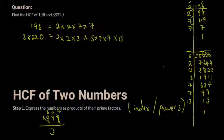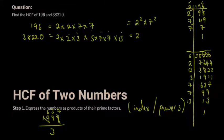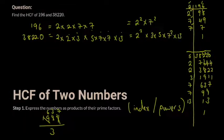One common mistake is forgetting a number, so take inventory — count your factors like checking stock. For 38,220 I count seven factors: that's correct. Put your equal signs in a straight line. Then convert to index form: write each prime factor once with its power. For 38,220 in index form: 2² × 3 × 5 × 7² × 13. And for 196: 2² × 7².